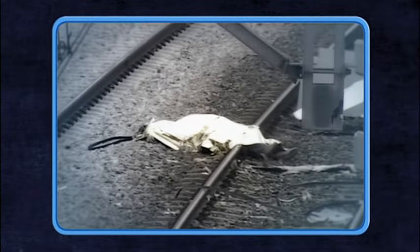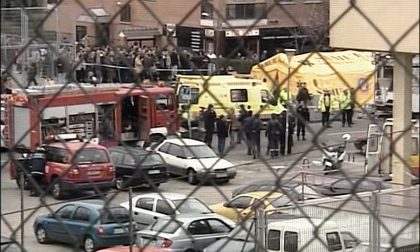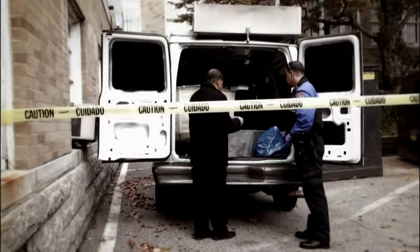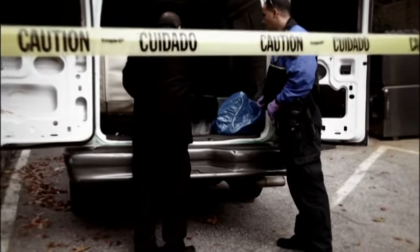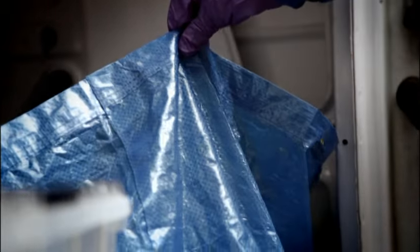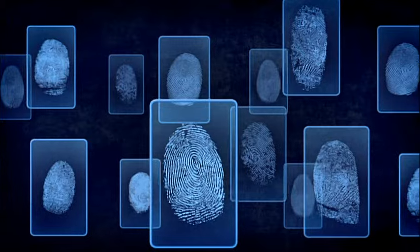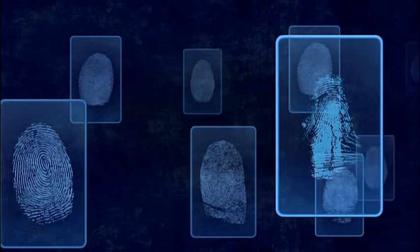The investigation to find the Madrid bomber sends shockwaves through the forensic community. And it all starts here, in a commuter parking lot ten stations away from where the bomb went off. Spanish police find a van. Inside is a blue plastic bag containing bomb-making materials. It could be a huge break. It's possible fingerprints have been left behind on the bag itself.